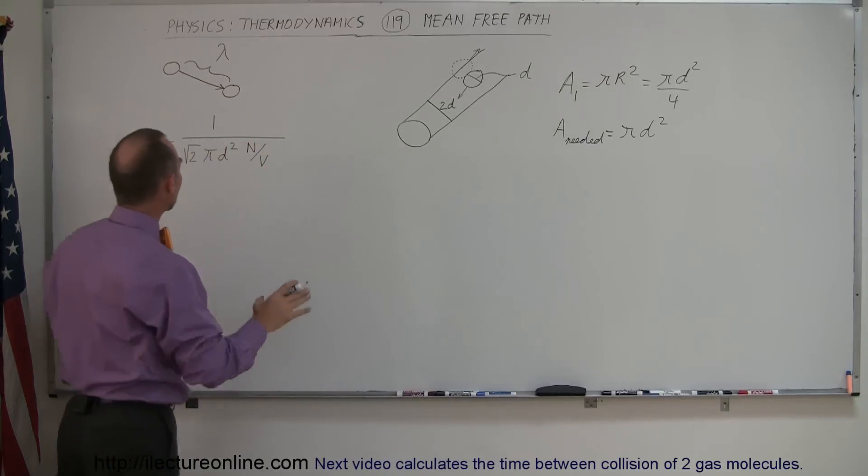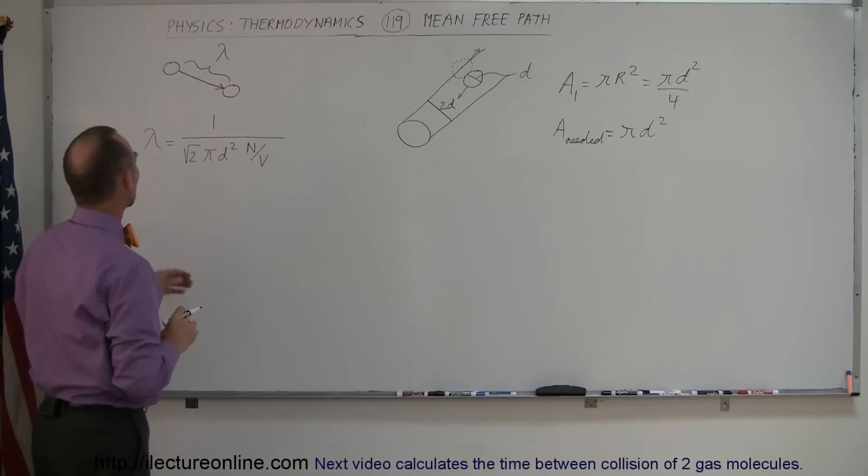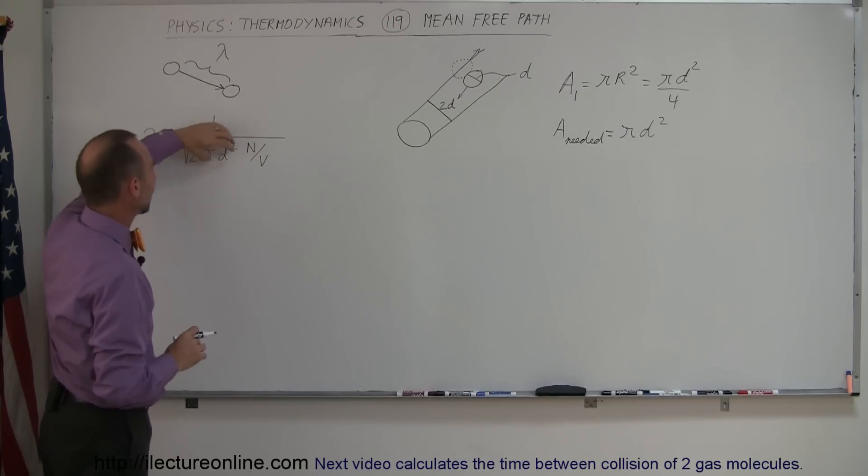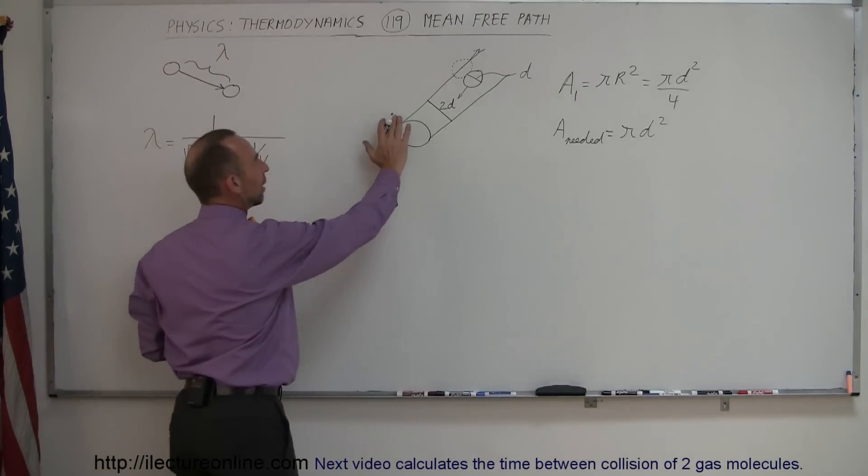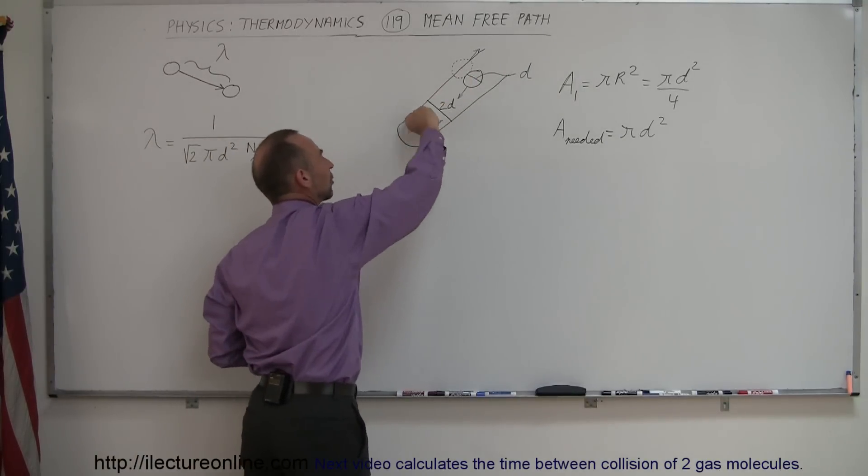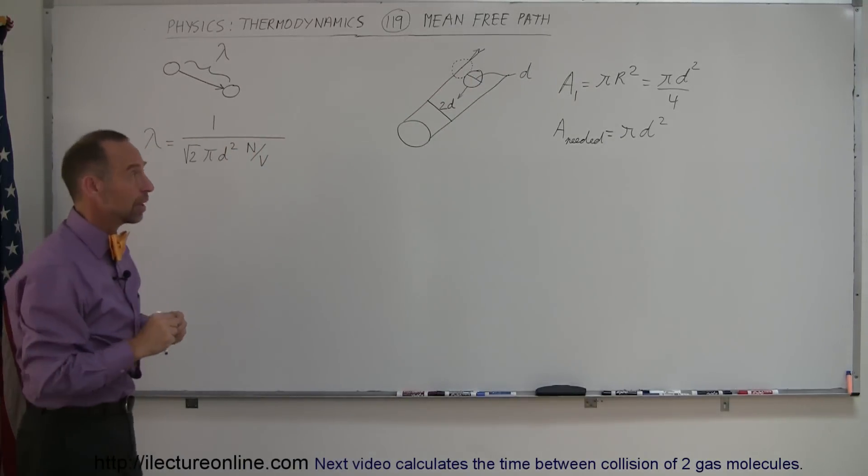Now with that let's take a look at this equation right here. So the mean free path is one over π d squared. The π d squared simply comes in of the cross-sectional area of the path the molecule has to have so it doesn't collide with another molecule.